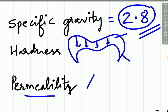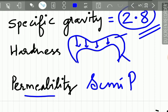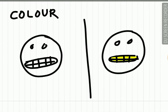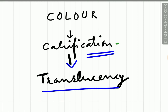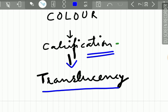The enamel acts as a semi-permeable structure; it allows certain ions and molecules to pass through it. The color of enamel is determined by the calcification or the mineralized tissue present in the enamel. This mineralized tissue regulates the translucency of enamel and thus the color varies.